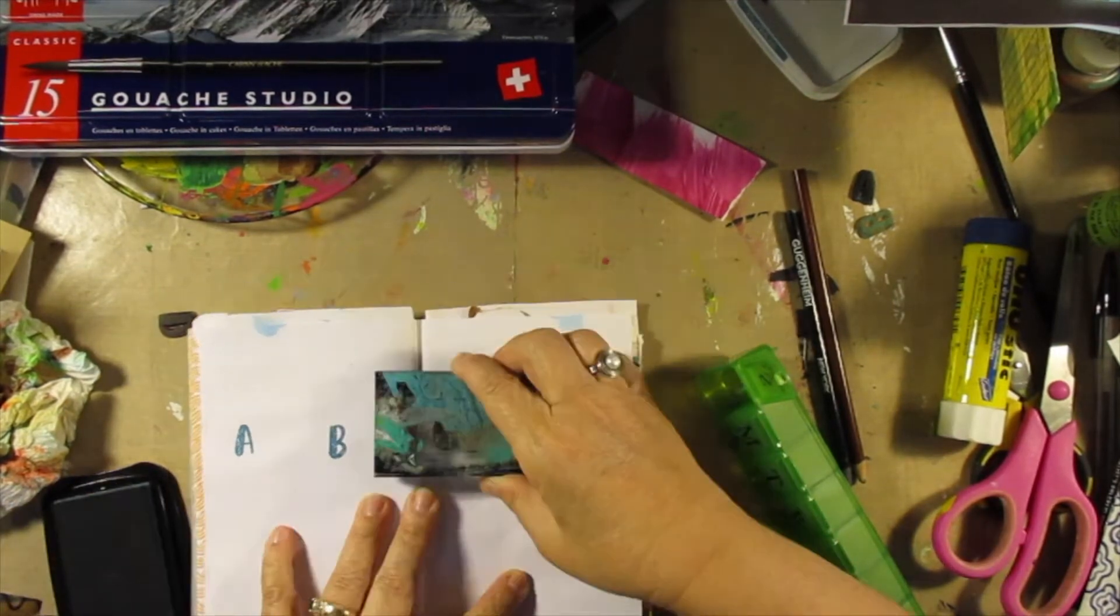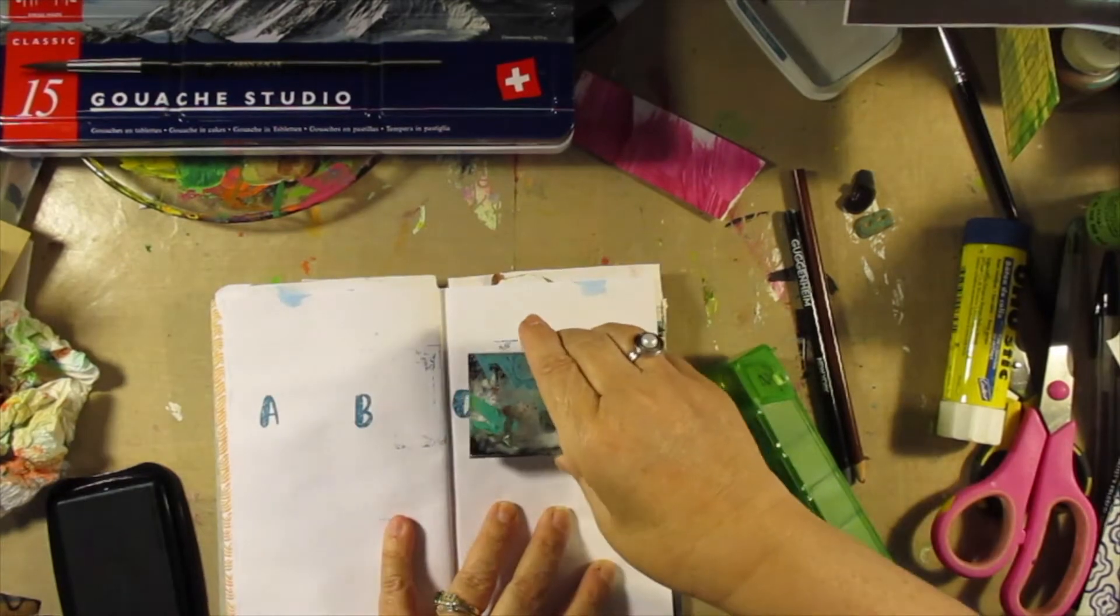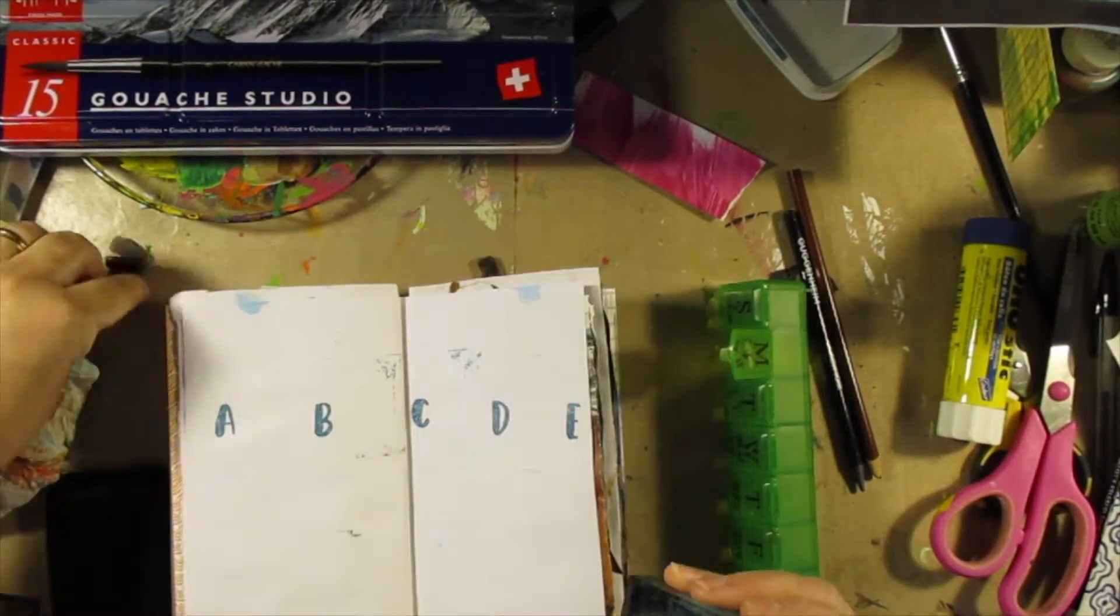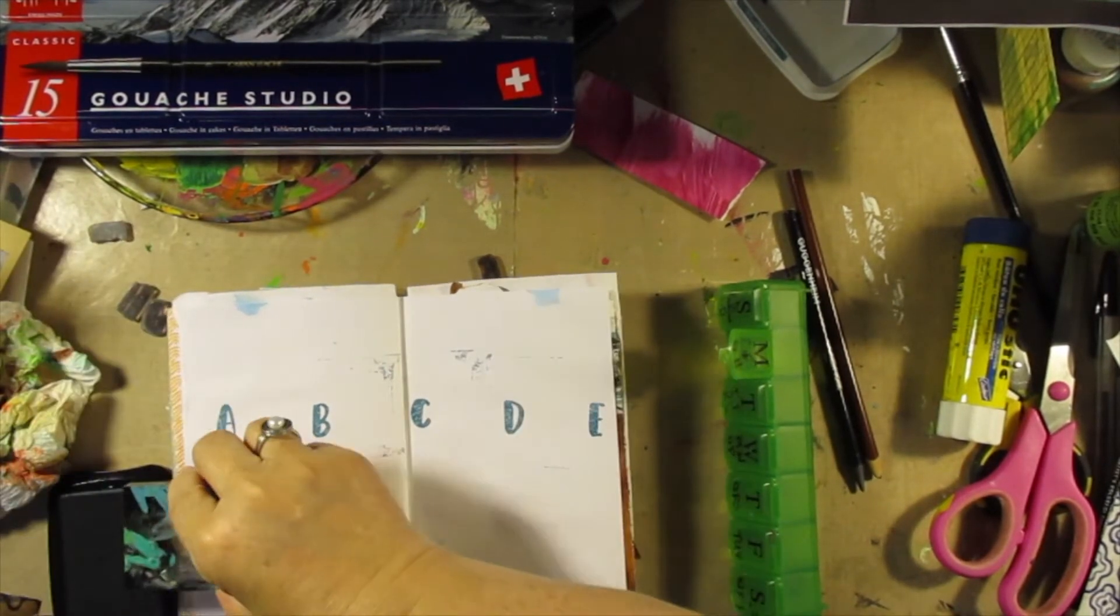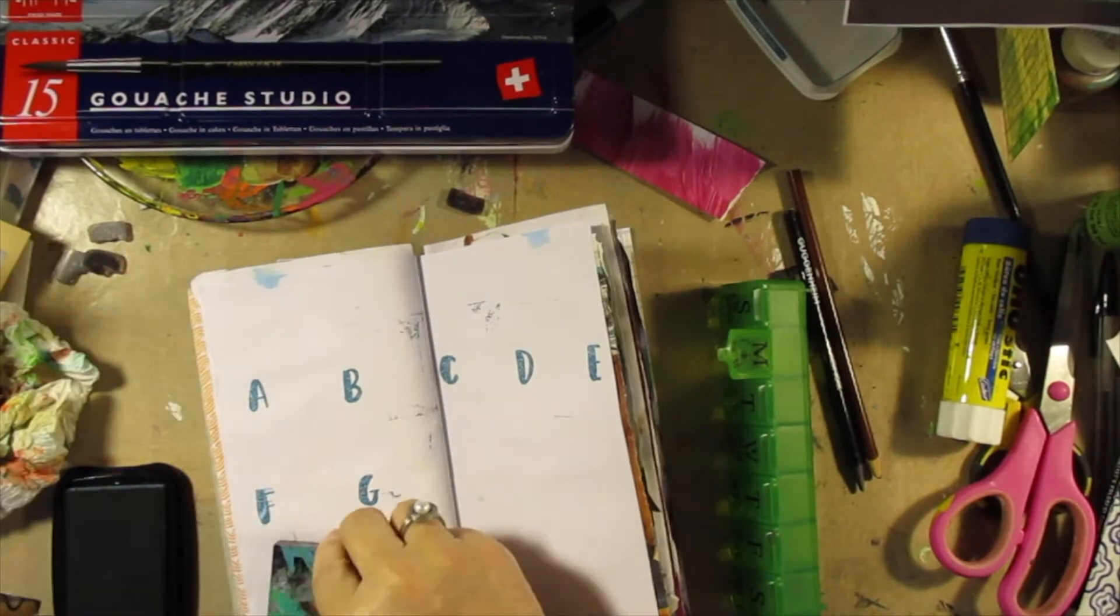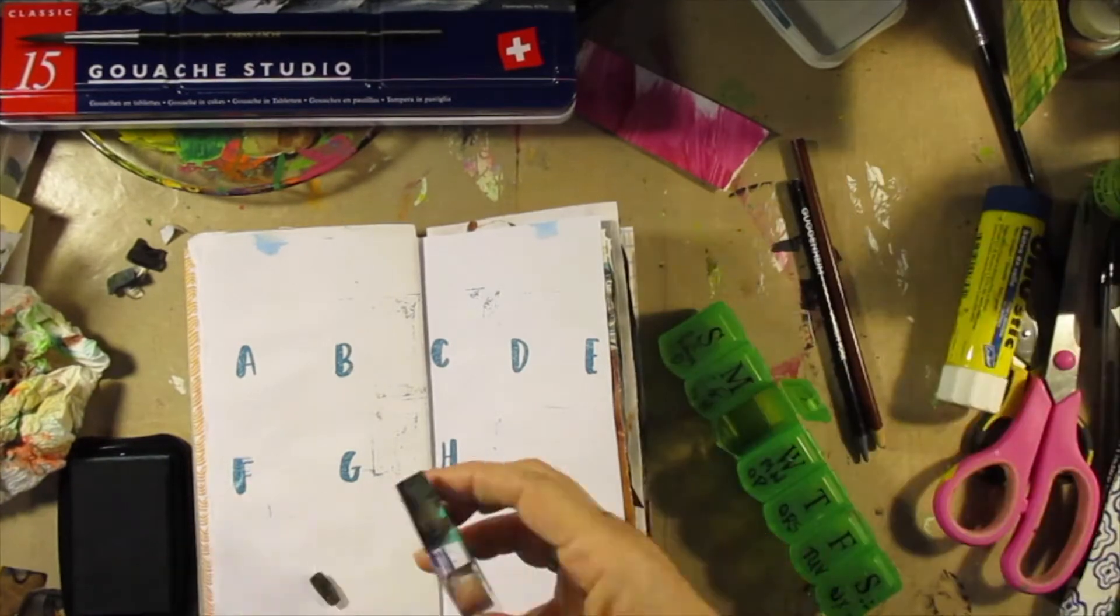I am going to do a Lake Murray alphabet because I see these on the internet and Instagram where they have like a sampler page and you have like instead of A is for Apple, A is for something else on Lake Murray. So that's what I'm gonna do.